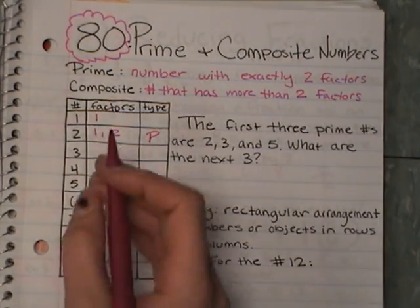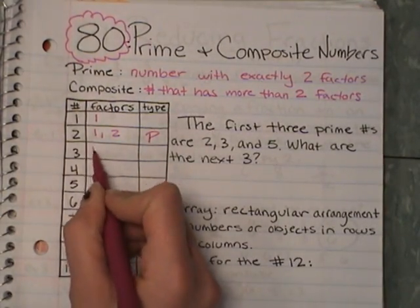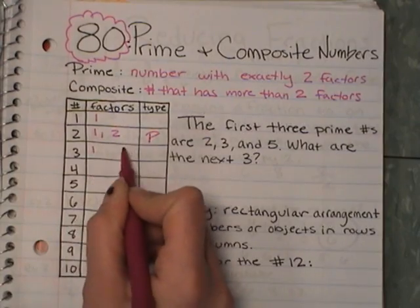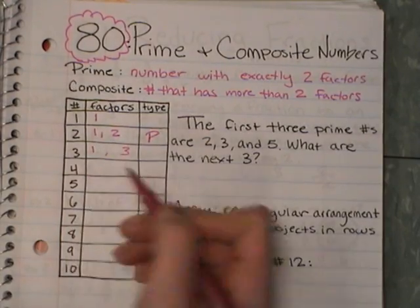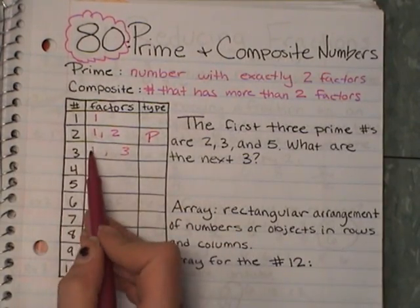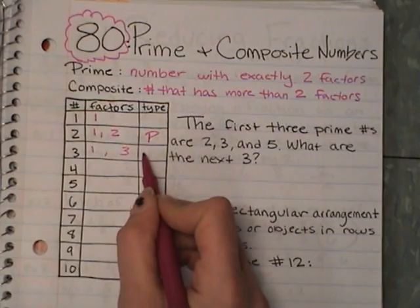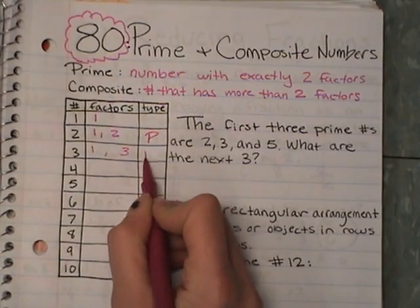Our number 3: if we were doing our upside-down rainbows, 1 and 3 — those are our two factors. So because I only have two factors, that makes 3 prime.